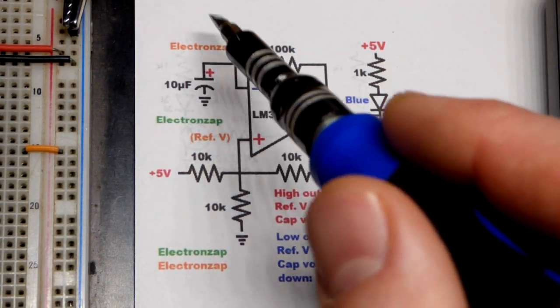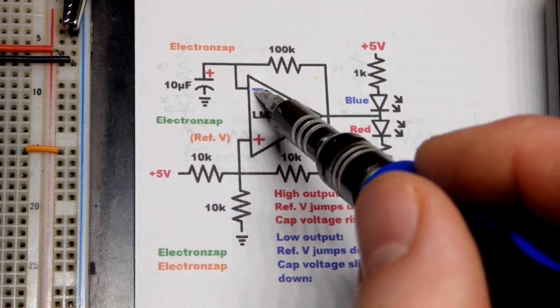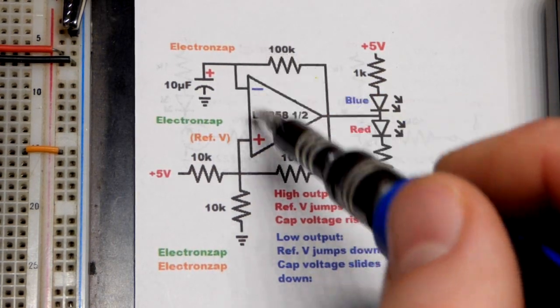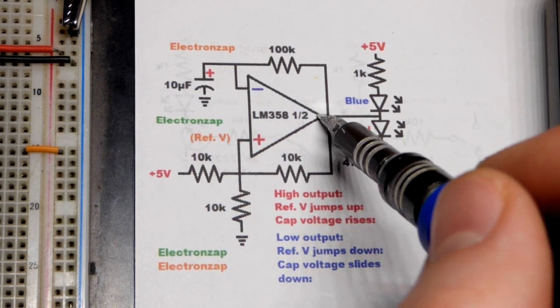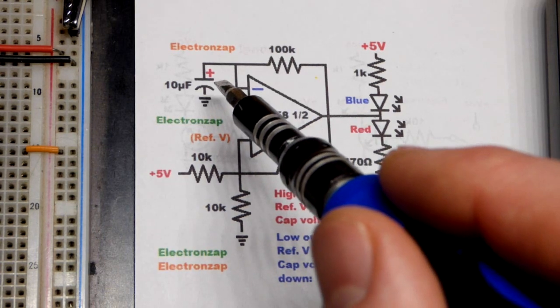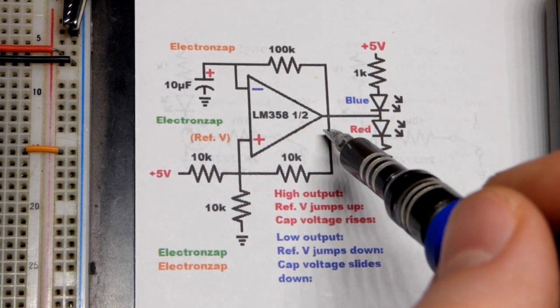So voltage is going to go up. At some point, it's going to go higher than what we have at the non-inverting input. So that's the inverting input. We'll have a higher voltage. The output is the opposite of what the inverting input is. It wants to be more like the non-inverting. So once this gets higher, that sets the output low.